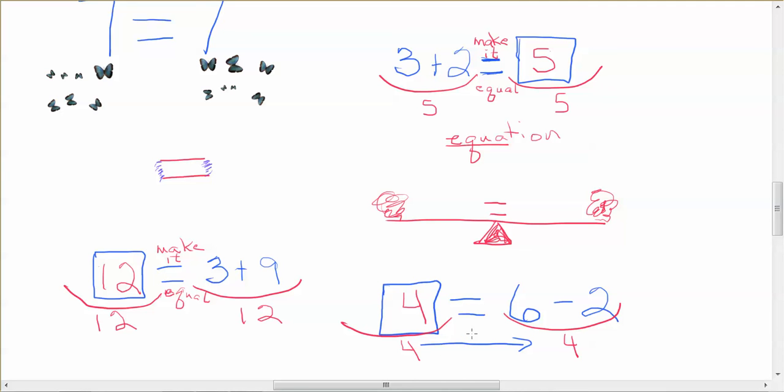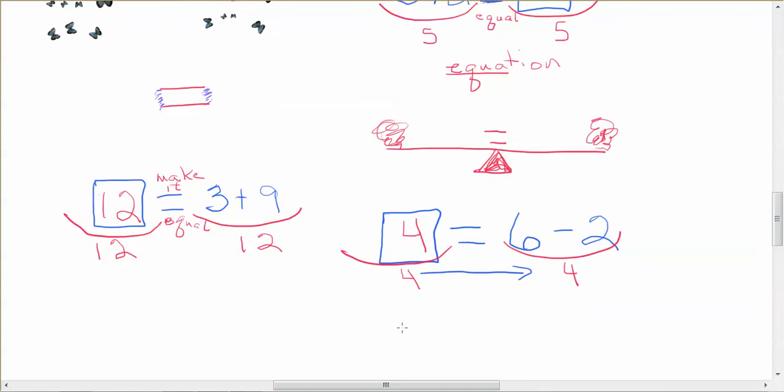And this becomes a little confusing. I don't know why kids think that they need to go backwards, but sometimes they do. So I wanted to point that out to you, that we always just go straight, straightforward, left to right, just like we always do. And you just read what comes to you. Some number, that's what the box means, right? Some number is equal to six minus two. And that's how we handle these.